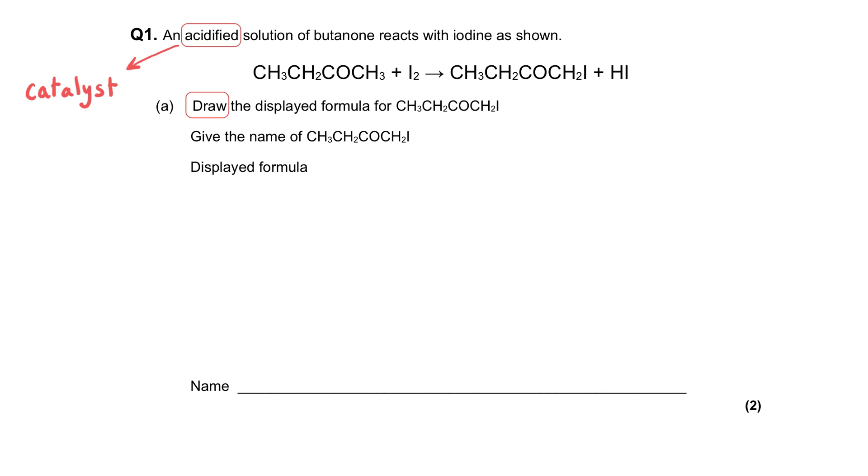Draw the displayed formula for the first of the two products and give the name of that product. Well, the displayed formula shows all of the covalent bonds in a molecule, and what we've been given is a structural formula.